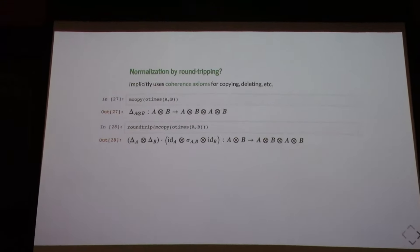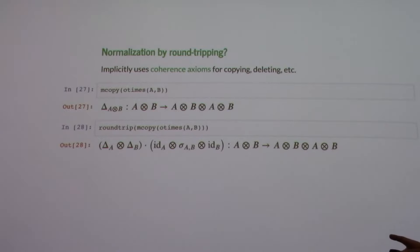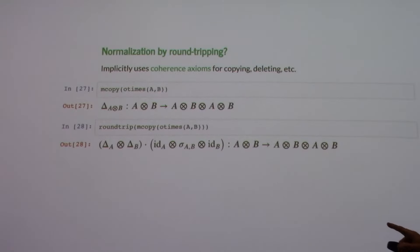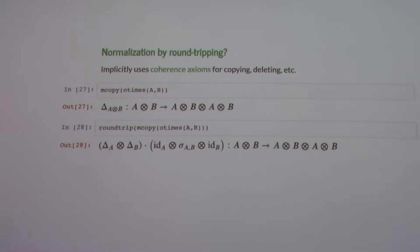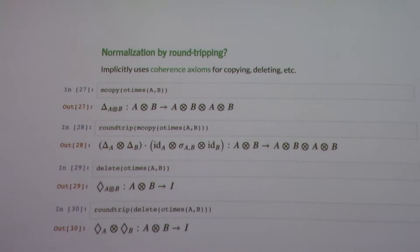Another thing you can see coming out of this: for those familiar with supplies of comonoids — if you have a copying operation on a product type A ⊗ B to get A ⊗ B ⊗ A ⊗ B, when you round-trip that you recover a different representation, and that falls out automatically. The equality of these two expressions is one of the coherence axioms for what Brendan and David have called a supply of comonoids. You likewise recover the other one for deleting.